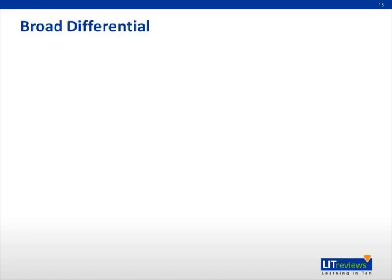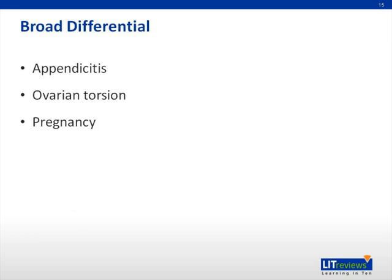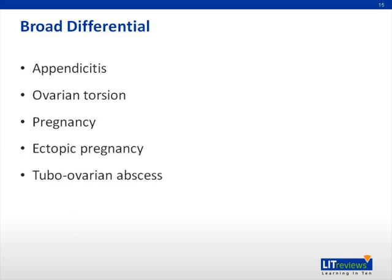The differential in a young female with lower abdominal pain is very broad. You have to consider appendicitis and ovarian torsion — sometimes very difficult to differentiate. Ovarian torsion tends to be acute in onset, while appendicitis may present with more gradual onset, fever, nausea, vomiting, and right lower quadrant tenderness with rebound. Always get a pregnancy test, as an ectopic pregnancy is something you absolutely do not want to miss. Consider tubo-ovarian abscess if there's a history of STIs, pus from the cervix, or significant adnexal tenderness or fullness. A urinary tract infection or pyelonephritis can also cause many of these symptoms — get that urine sample.